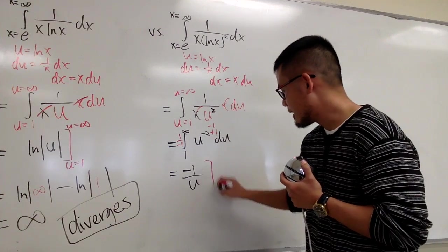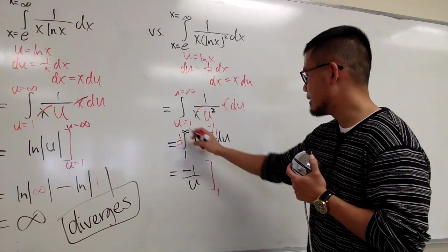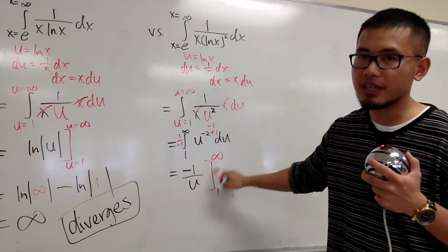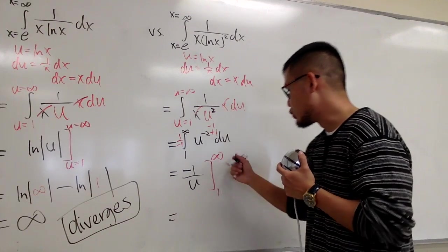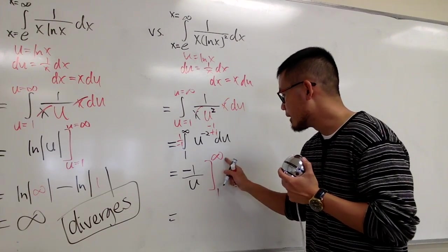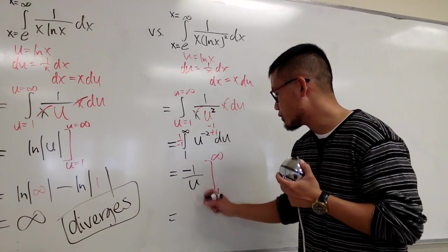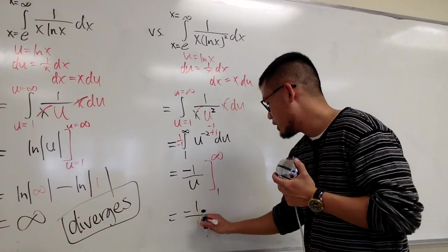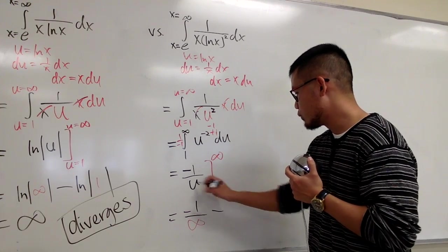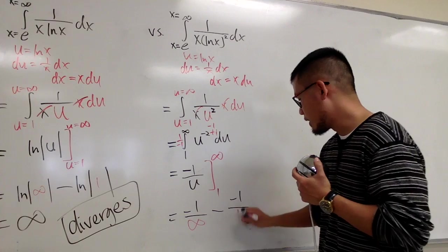All right, now, plug in numbers, 1 here and then plug in infinity, technically taking limit. But this is just a shorthand way to write it. Plug in infinity, take the limit, as u goes to infinity of this, 1 over infinity, and then minus, plug in 1 here, so negative 1 over 1.